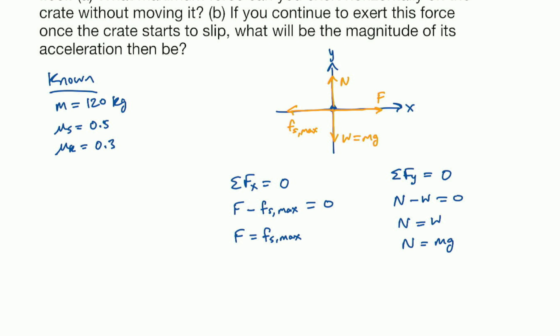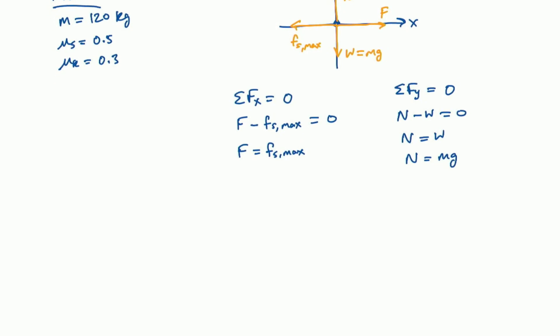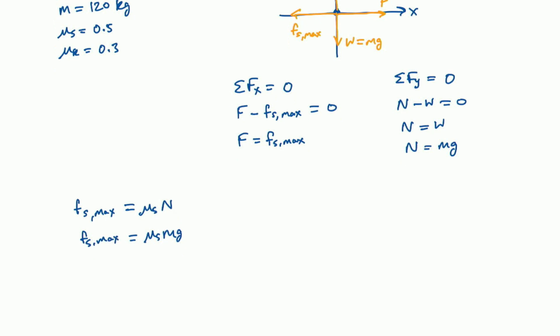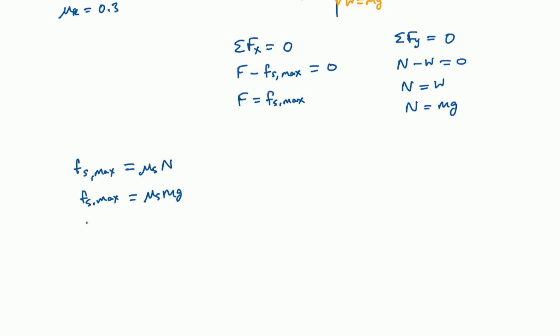We also have the definition of friction. By definition, F_s,max is equal to μ_s times N. Well, μ_s times N, N is mg, so we'll substitute for the N. And now we can substitute the values and find the static friction.